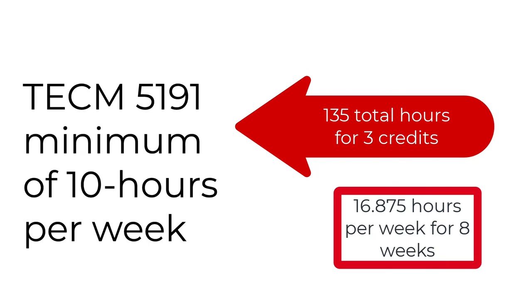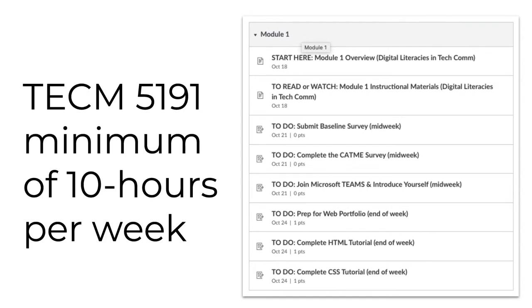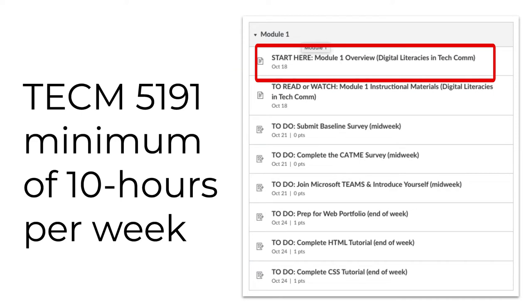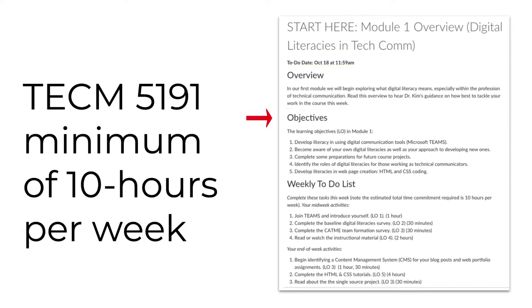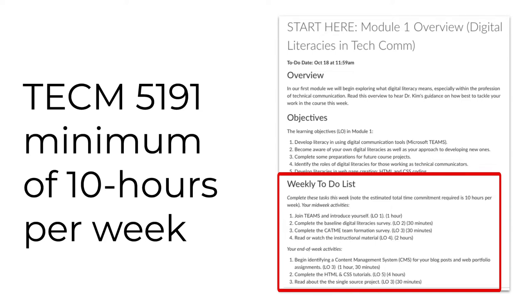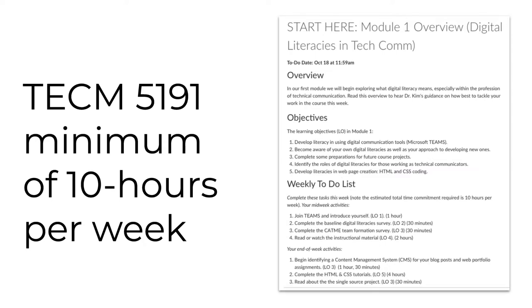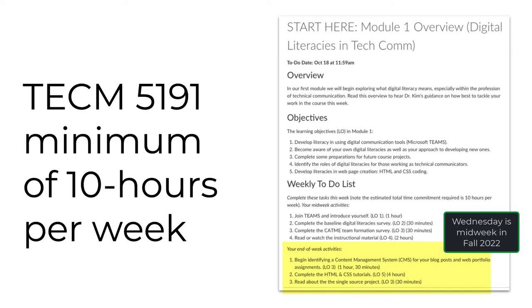The good news is in TECM 5191, I've assumed your workload every week is a minimum of 10 hours. I've carefully considered how you should allocate those 10 hours to perform best in the course. You'll find that information for every module in Canvas in the Start Here module overview. When you open that overview, you'll see a recommended date and time to view the information, a brief description of the main topic, and a list of learning objectives for that module. There's also a weekly to-do list, which includes every activity you should be engaged in — not all of these are graded. The to-dos are divided into midweek, meaning Sunday at midnight to Thursday at midnight, and end of week, from Thursday at midnight to Sunday at midnight.